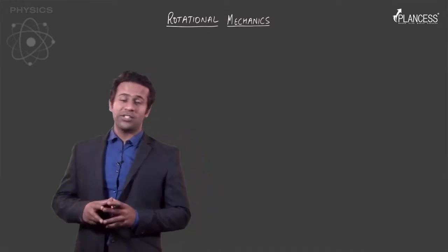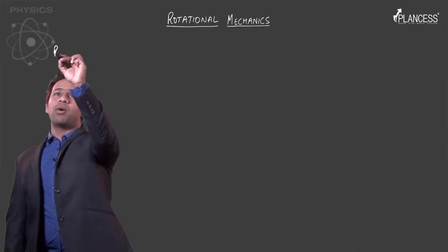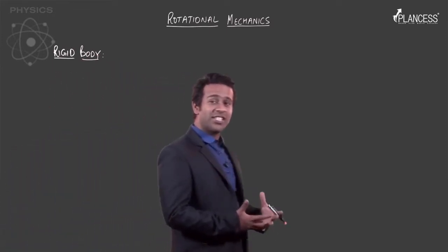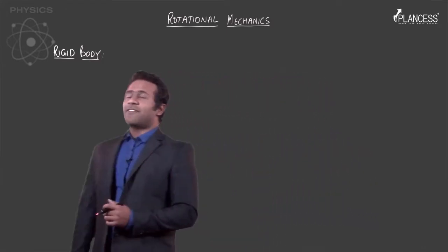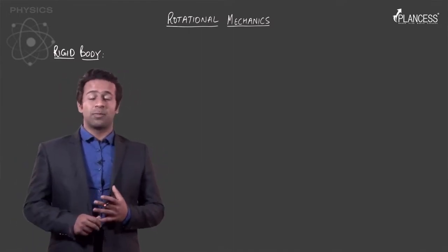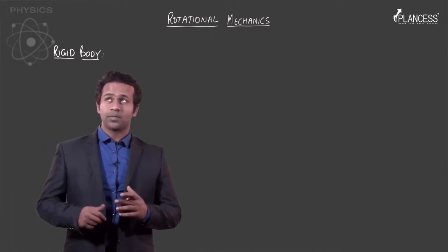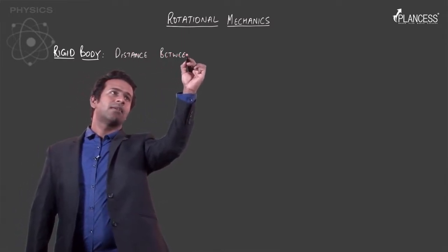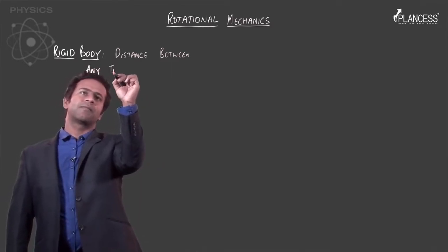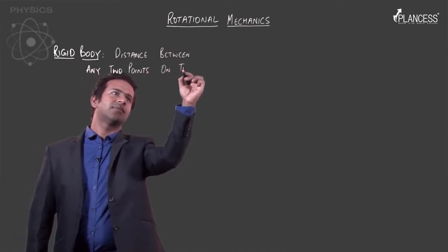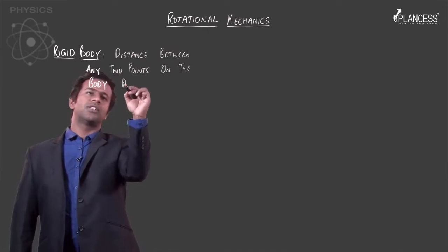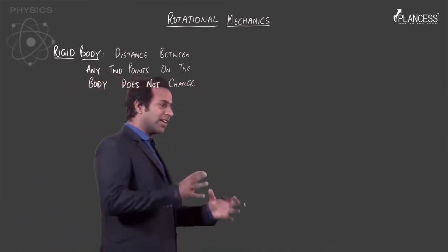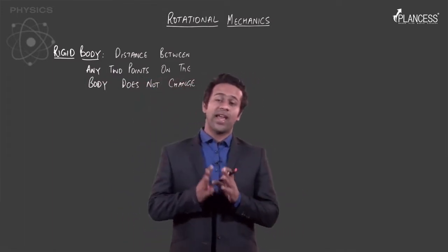So before we start our discussion on rotational mechanics, let's first understand what a rigid body is. A rigid body is a body which does not essentially change its shape. In strict definition, a rigid body is a body where the distance between any two points on the body does not change.